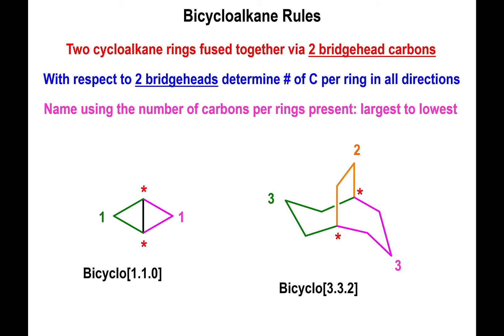The way we name these molecules is by using the prefix 'bicyclo,' and then using brackets we indicate how many carbons there are to the left, to the right, and on top of the bridge heads, always in decreasing numerical order. In the case of the first molecule, you have one carbon to the left, one carbon to the right, and zero carbons above the bridge heads, so you input the numbers as 1.1.0 within the brackets.